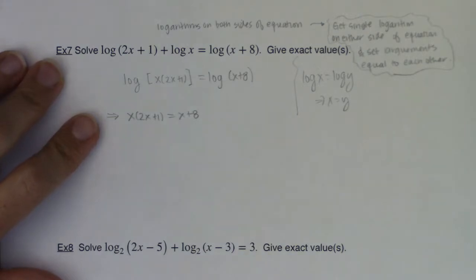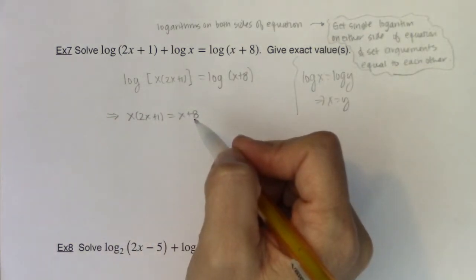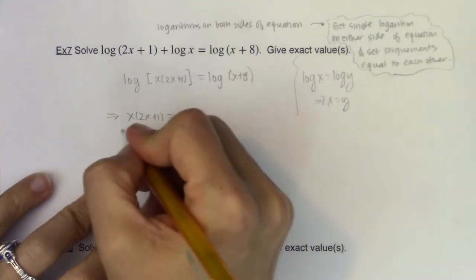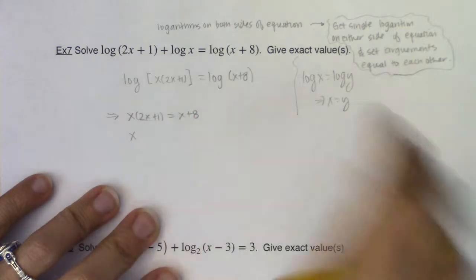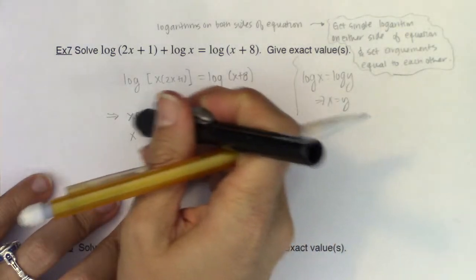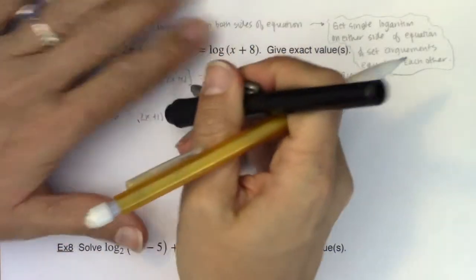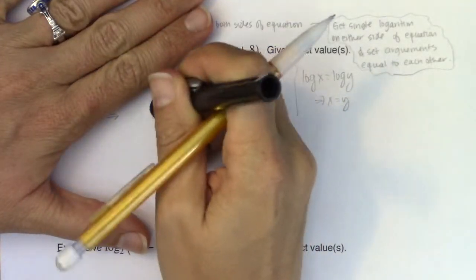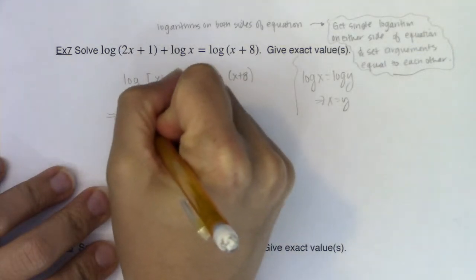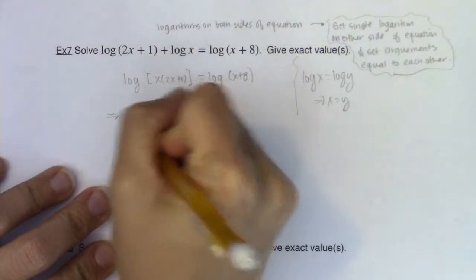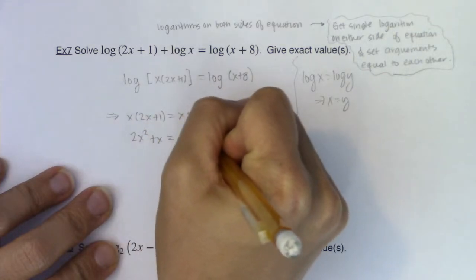So that actually gets rid of the logarithms just in general. And now I actually have a quadratic equation, and I can solve a quadratic equation. So I'm going to go ahead and distribute. I will have 2x squared here. Hold on, let me rewrite this. All right. So, all right, I will have 2x squared plus x. That will be equal to x plus 8.